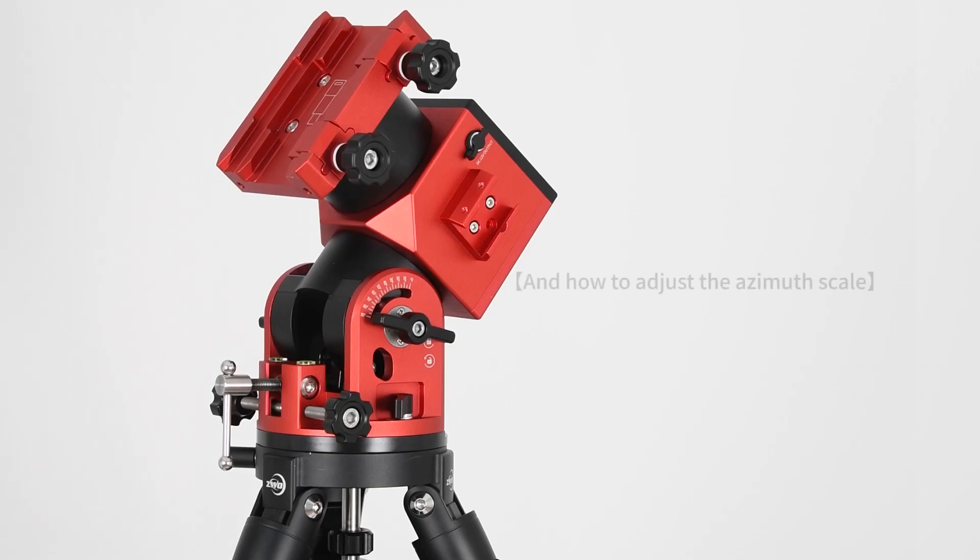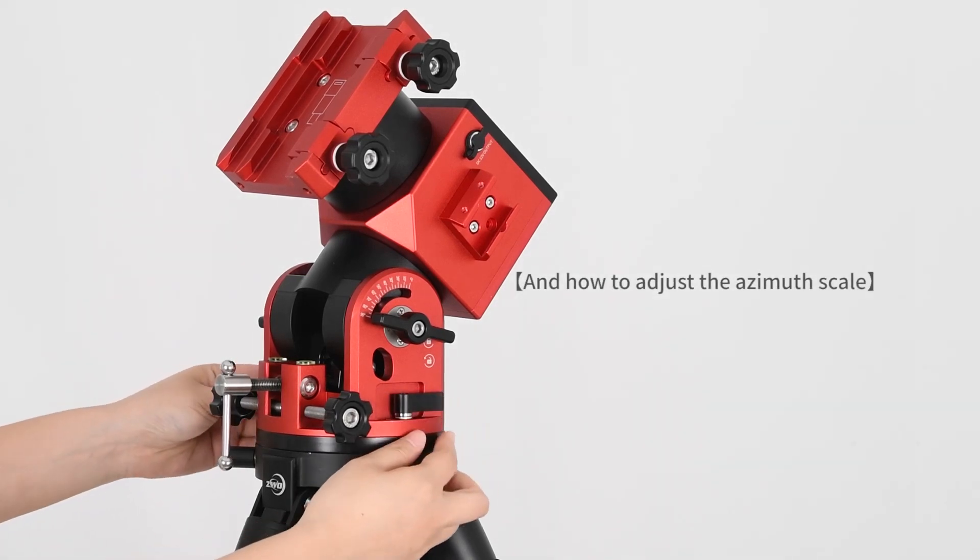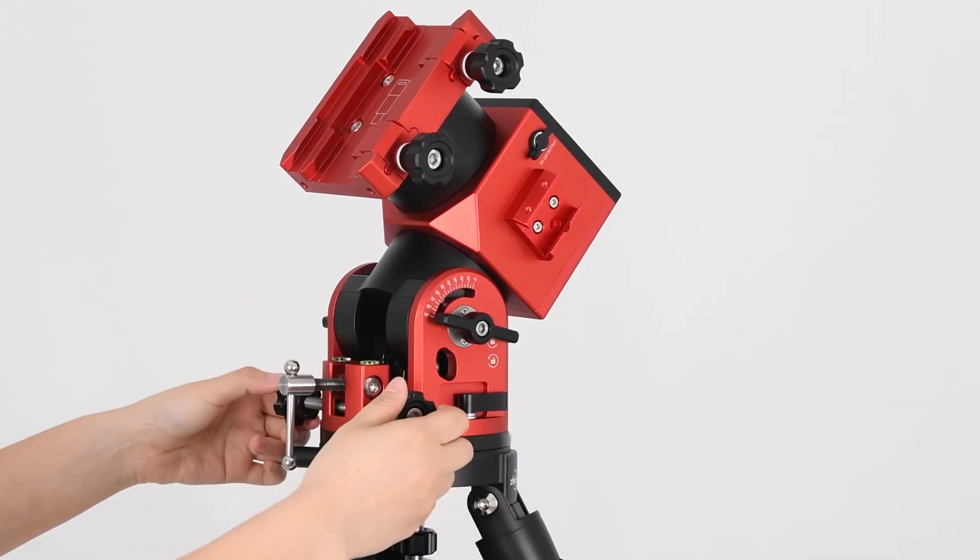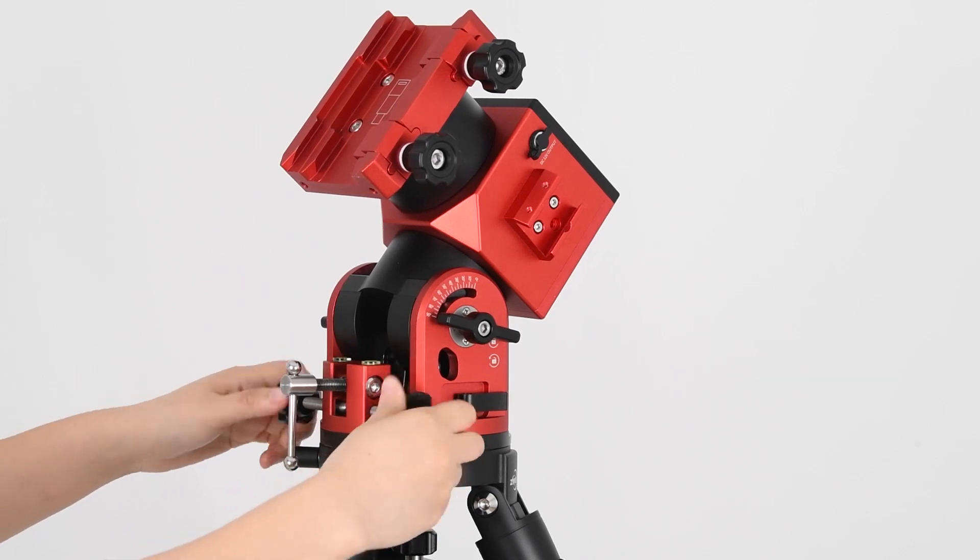Adjust azimuth scale. Loosen the azimuth lock and rotate the azimuth adjustment knob. Tighten the azimuth lock after adjustments have been completed.